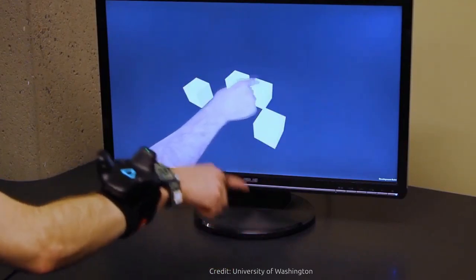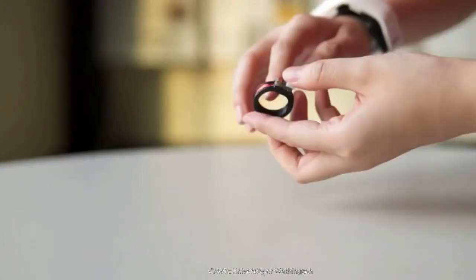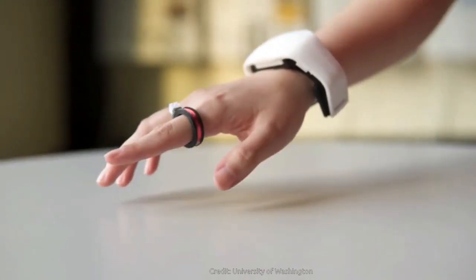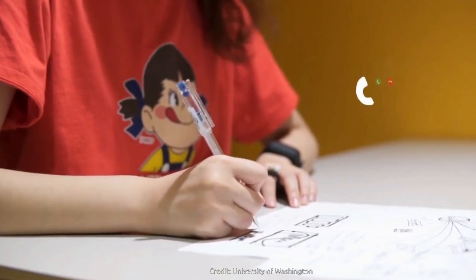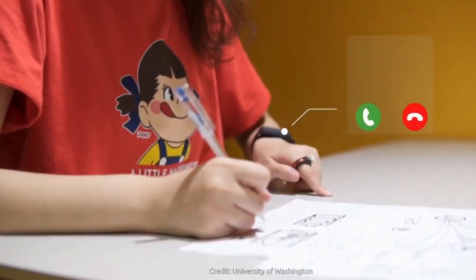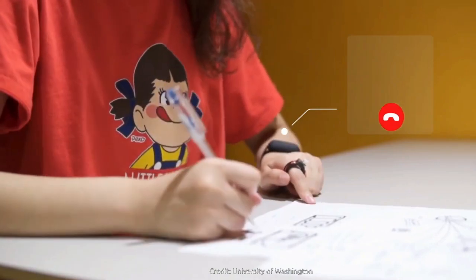The researchers designed Arrow Ring to be ready to use as soon as it comes out of the box, and not be dependent on a specific user. They tested the system on 12 participants with different hand sizes.